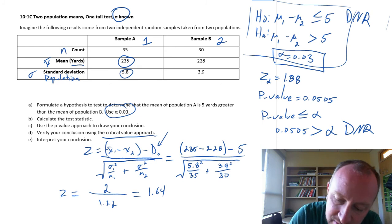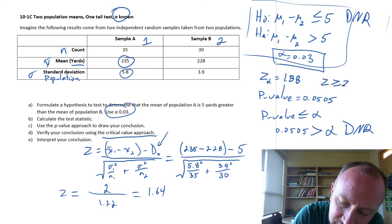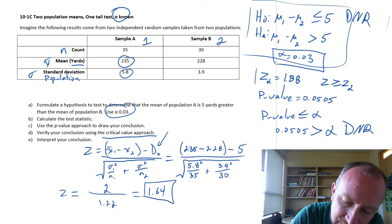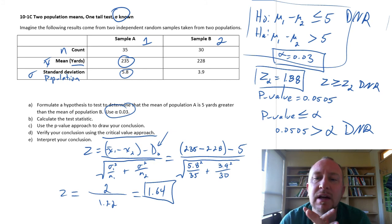And again, we will reject if our test statistic is greater than or equal to the critical value. And here I have a test statistic of 1.64, critical value of 1.88. So again, we get the same result, same conclusion. Do not reject. I have insufficient evidence to show that the difference between these two populations averages is greater than 5.